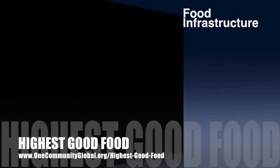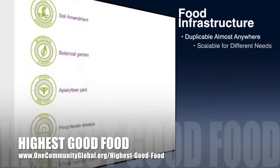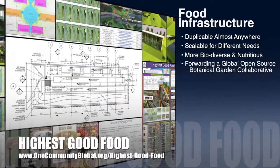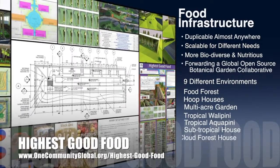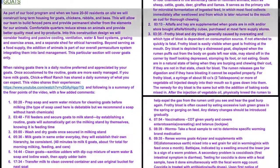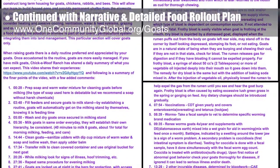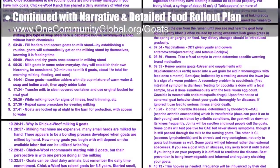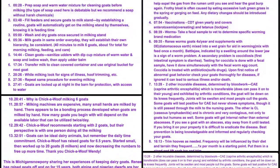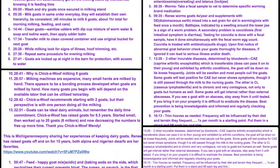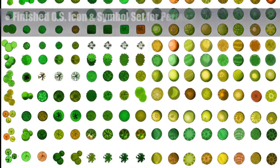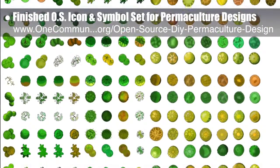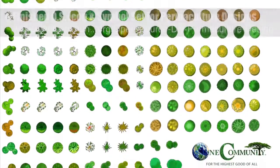One Community's approach to highest good food is duplicable almost anywhere, scalable for different needs, more biodiverse and nutritious, part of forwarding a global open source botanical garden collaborative, and includes nine different free shared and duplicable growing environments. This week the core team continued writing the behind-the-scenes narrative in the detailed food rollout plan, continued revising goat care details by transcribing steps from the daily goat routine at Chicka-woof Ranch video, and finalized our open source icon and symbol set for permaculture designs — now available in the resources section of the developing permaculture page.